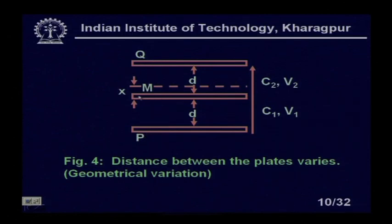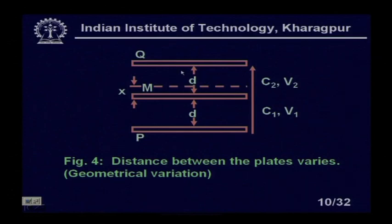Here, two fixed plates P and Q and one movable plate M are used. If M is exactly at the mid-position, the capacitance between P and M equals the capacitance between M and Q. If M is displaced upward by X meters, the capacitance between M and Q increases and the capacitance between M and P decreases. Placing these in opposite arms of the Wheatstone bridge gives a larger unbalanced output.